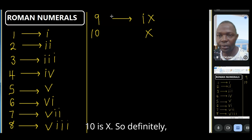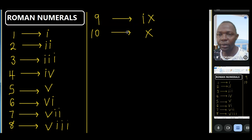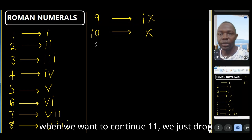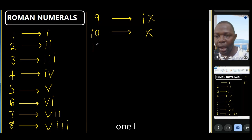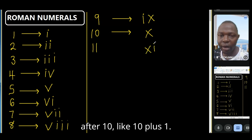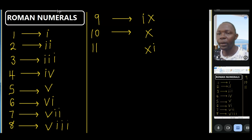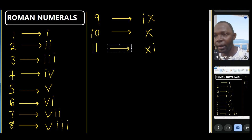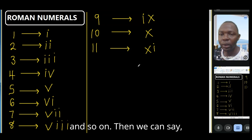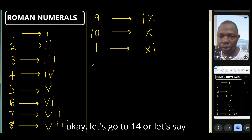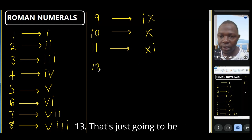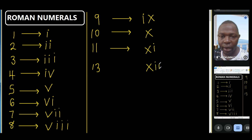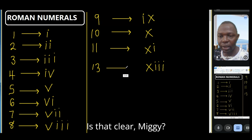Ten is X. When we want to continue to 11, we just add one I after X — like 10 plus 1. Twelve is XII, and so on. Thirteen is XIII. Is that clear, Migi?